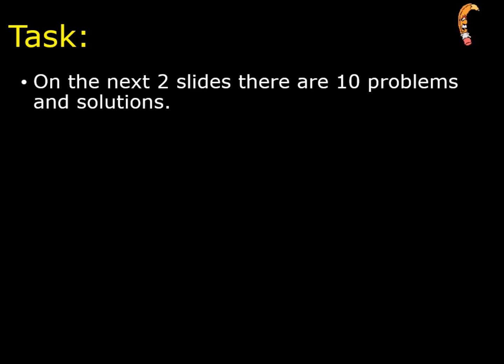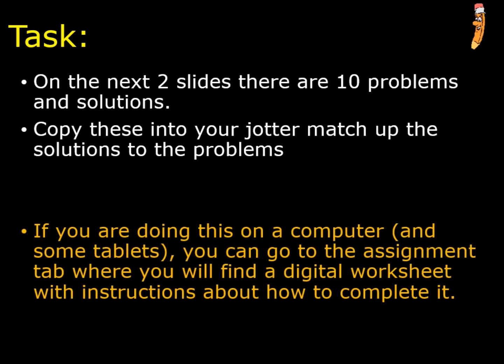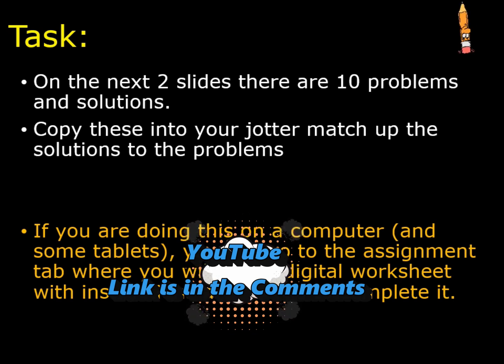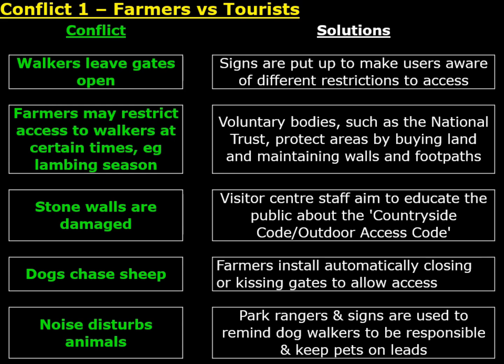So, our final task for the day. On the next two slides there are 10 problems and solutions. Copy these into your jotters and match up the solutions to the problems. Or, if you are doing this on a computer, laptop, or tablet, you can go to the comments below where you can find a link to the worksheet. The first one is Farmers vs Tourists — down the left-hand side are the conflicts and down the right are the solutions. Pause the video here, match them up, and rewrite them into your notes in the correct heads-to-tails order.